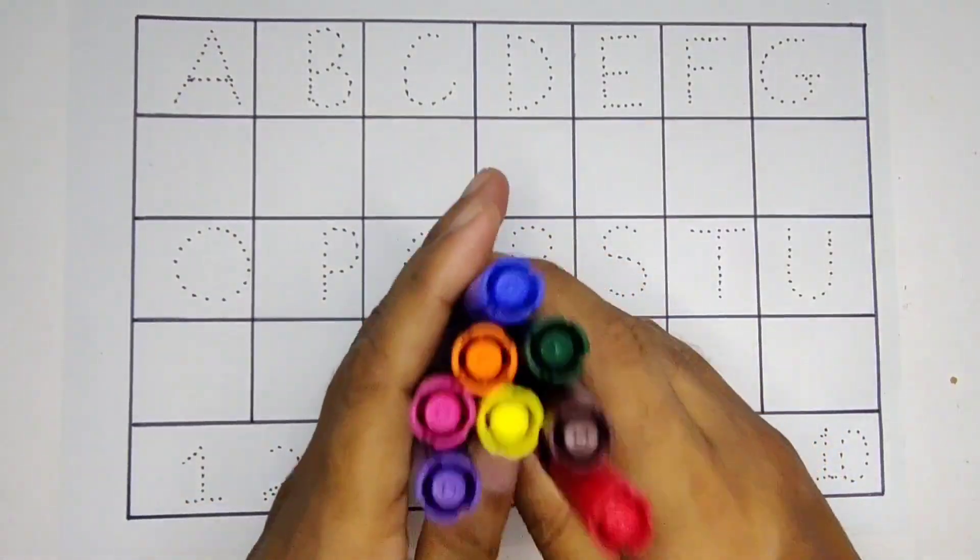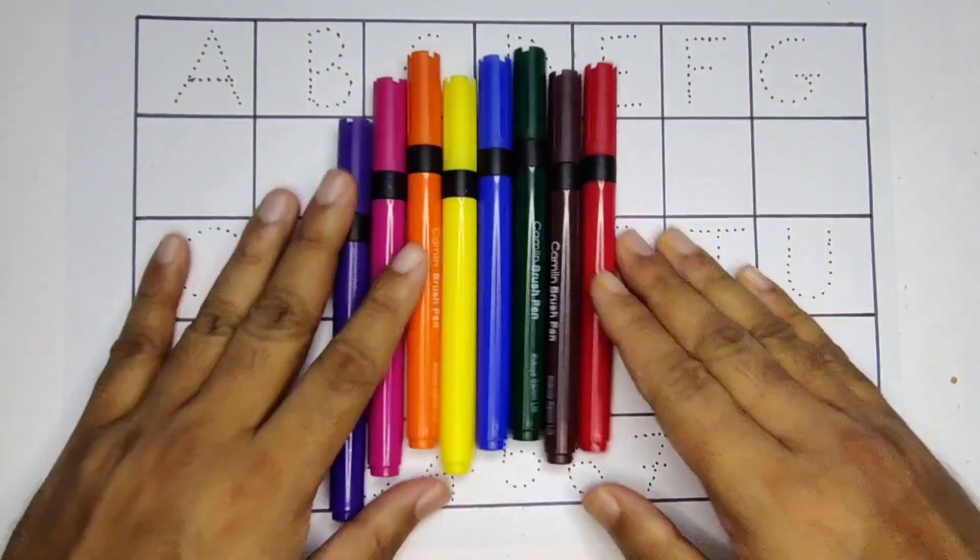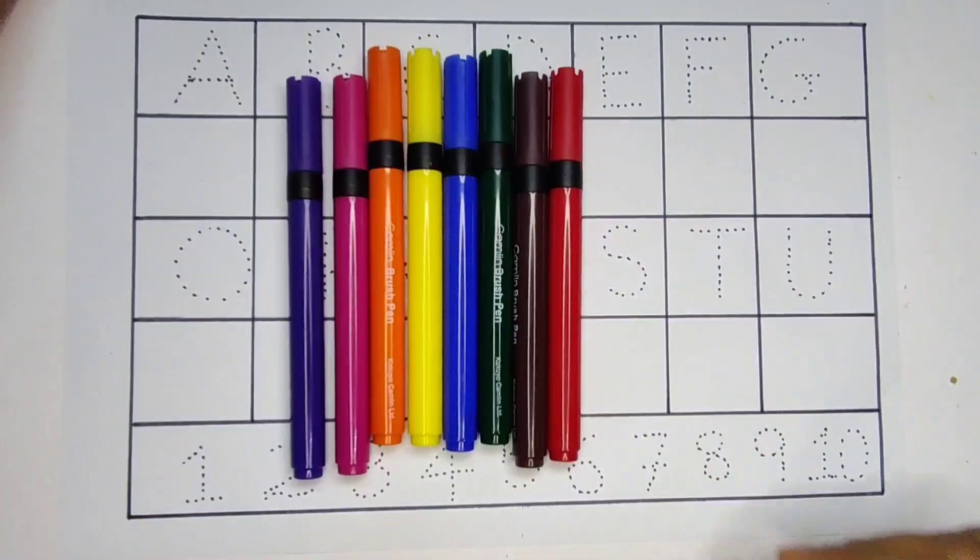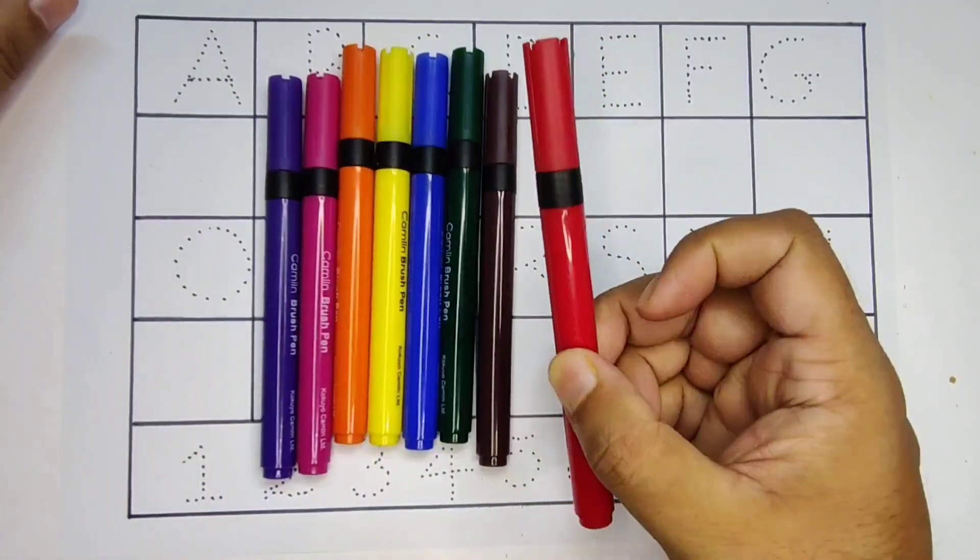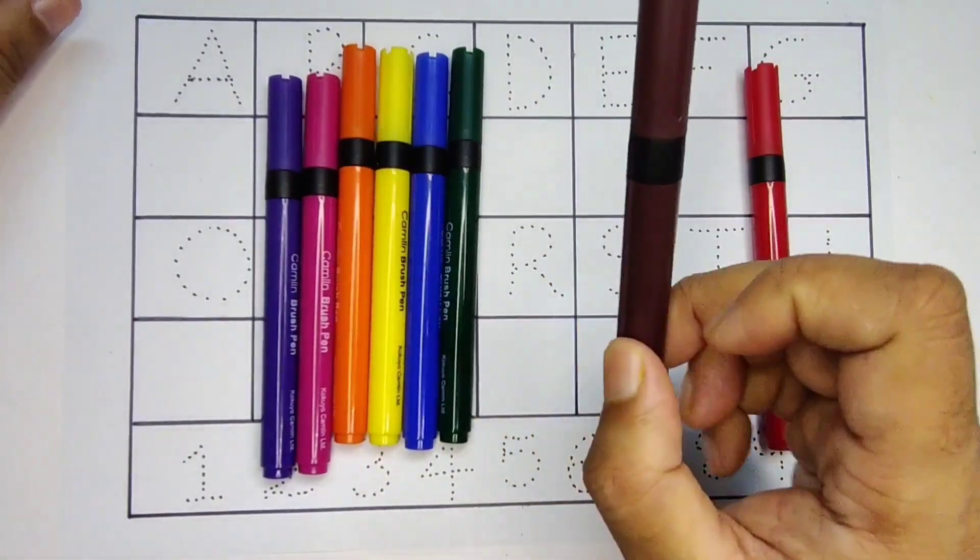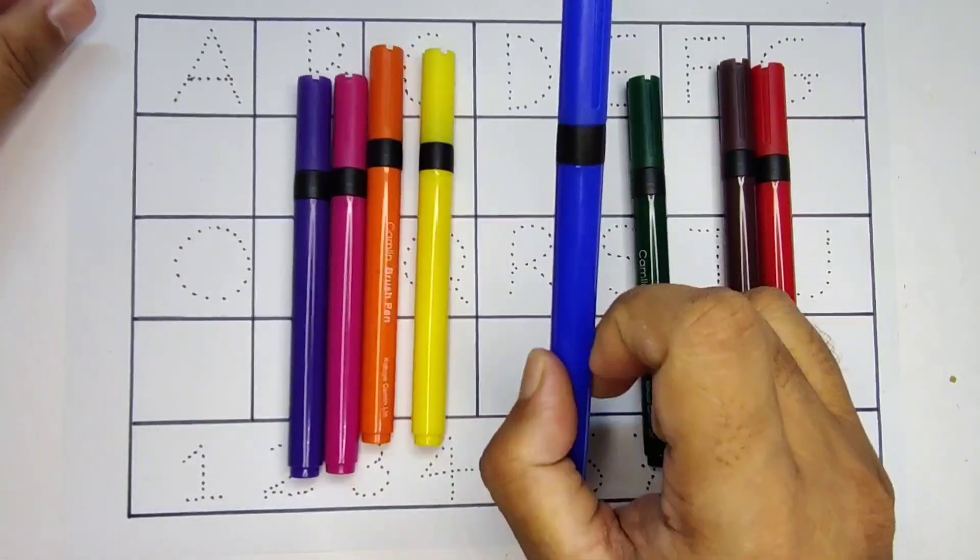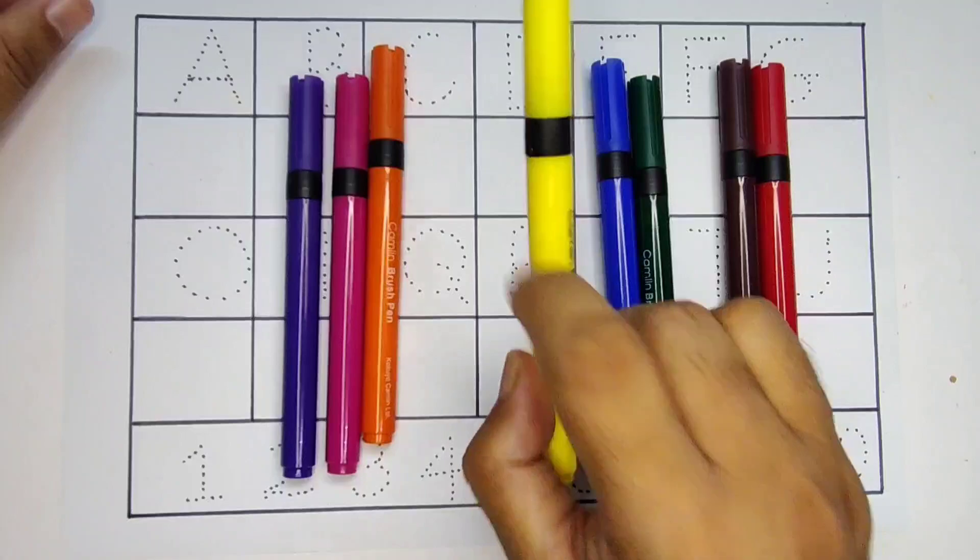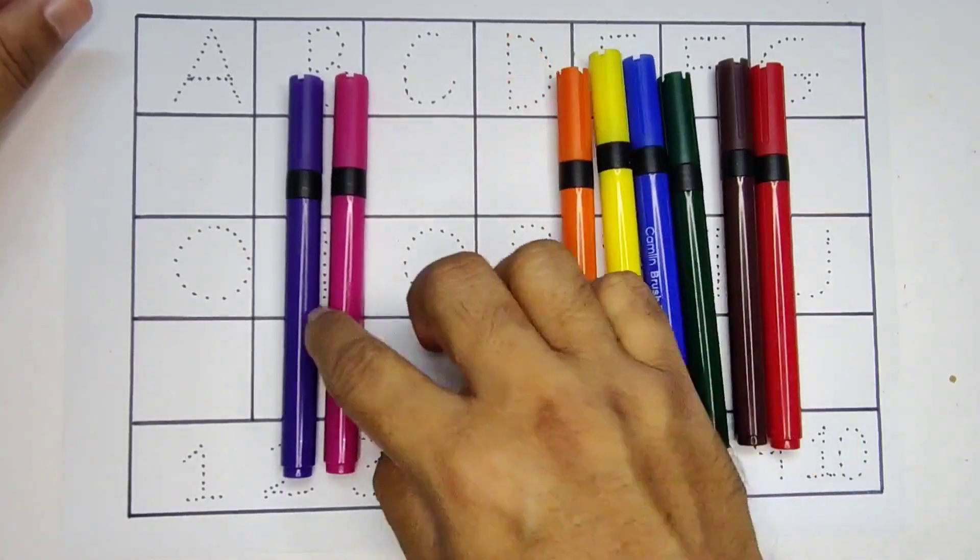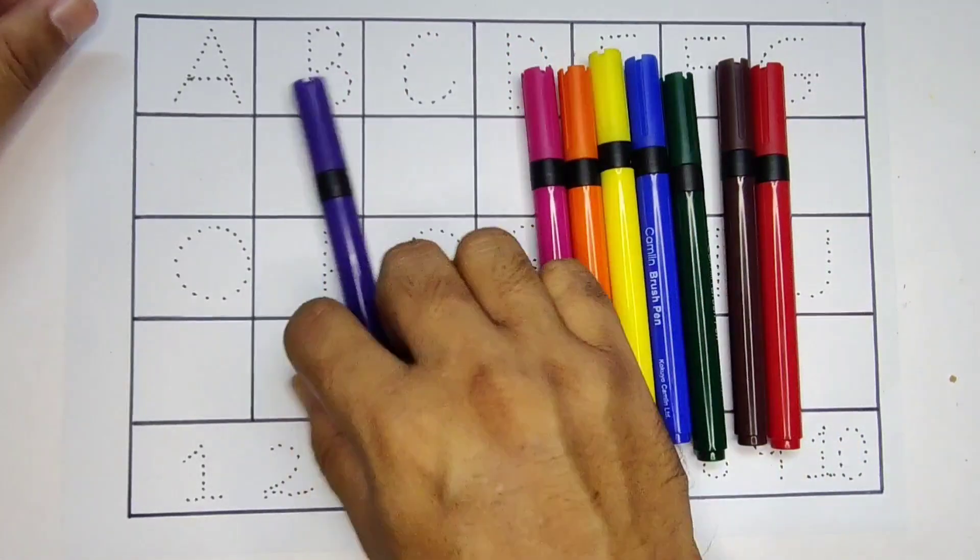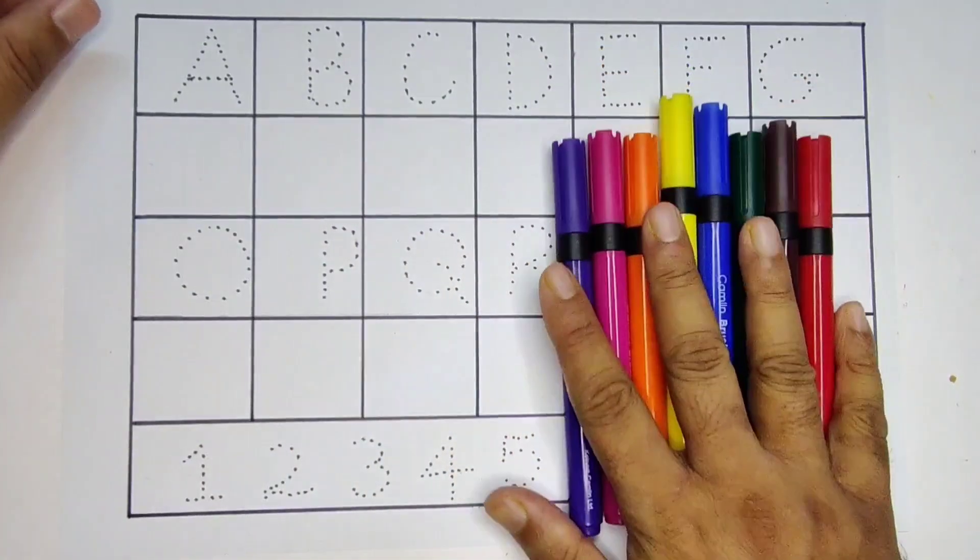Hello kids, first learn the colors. This is red color, chocolate color, green color, blue color, yellow color, orange color, pink color, and purple color.